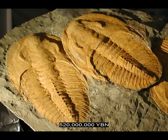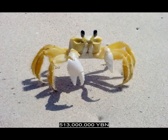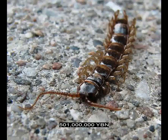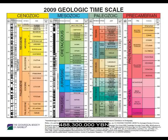The arthropods' trilobites evolve—with a segmented body divided into three vertical lobes. There is a transition from soft-bodied organisms to clam-like shell organisms to the segmented calcite and chitin shells of the trilobites. The arthropods' crustaceans evolve—ancestor of all shrimps, crabs, lobsters, and barnacles. The arthropods' myriapods evolve—ancestor of all centipedes and millipedes. The end of the Cambrian and start of the Ordovician period.